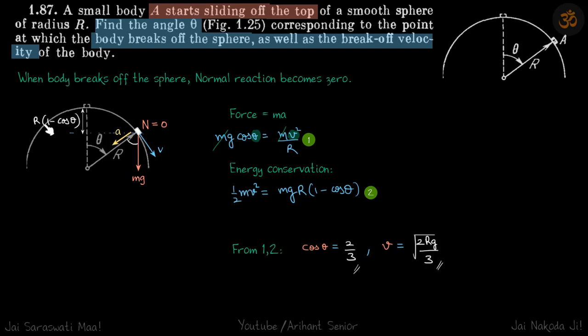So half mv square is equal to mg r into 1 minus cos theta.